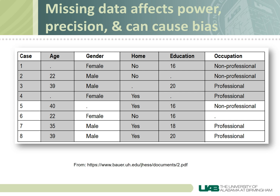This is a table containing data from a study on home ownership. Let's say we're interested in developing a regression model on the predictors of home ownership, labeled as 'home' in this table, and we want to see what effect age and education have on home ownership. Only the cases with full data on these three variables can be analyzed. Only cases 5 through 8 will be analyzed because the other cases have missing data. We started with 8 cases but can only analyze 4 of them, so power will be reduced because we have a smaller sample size than we started with.